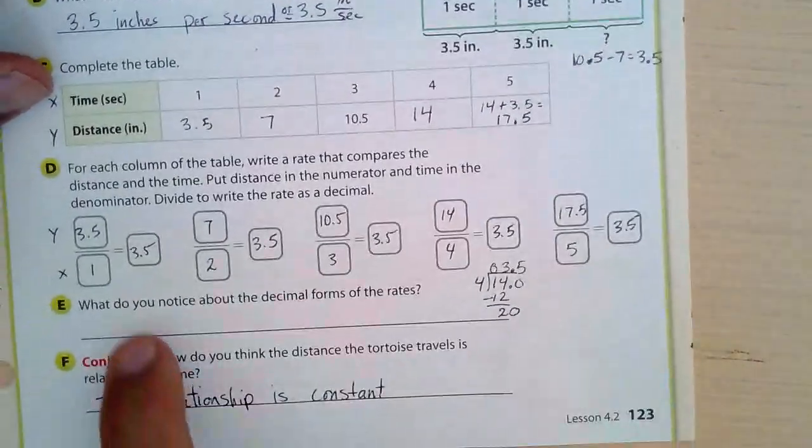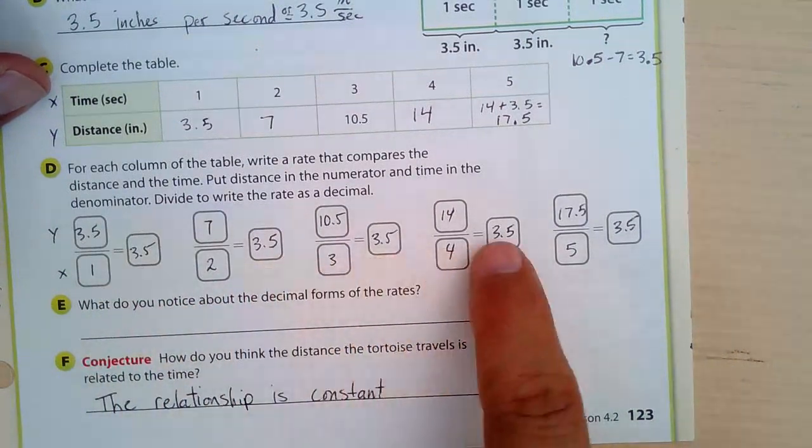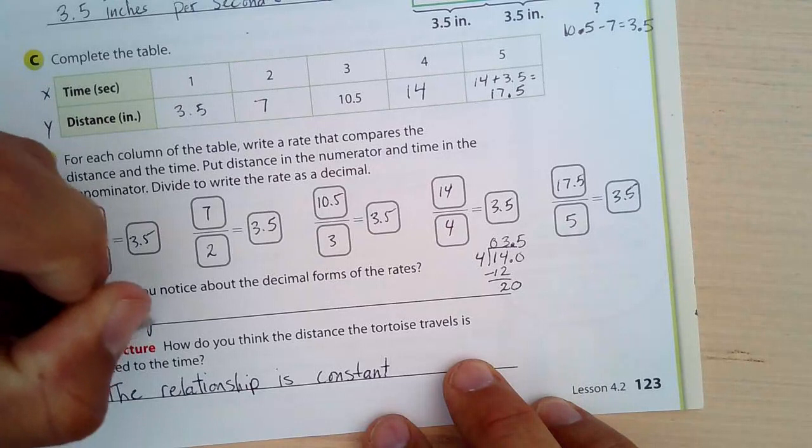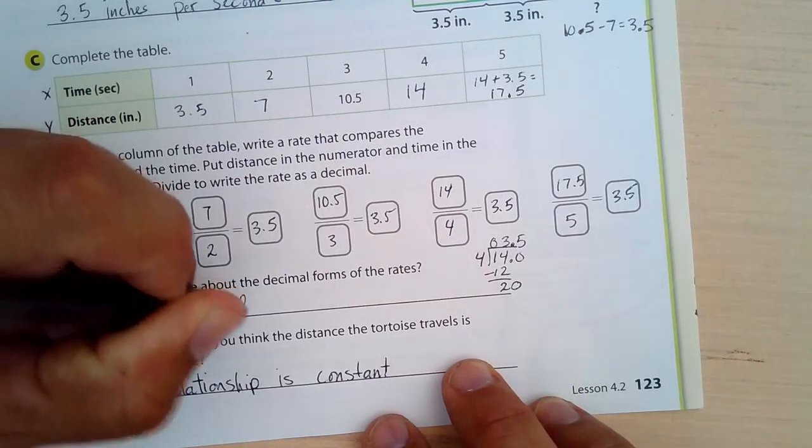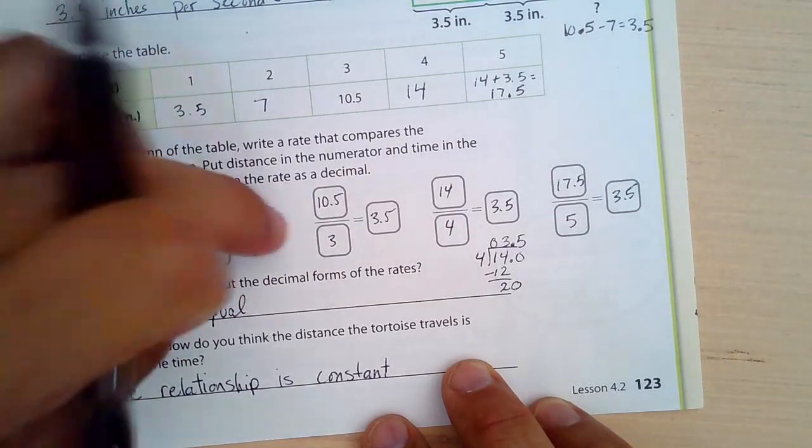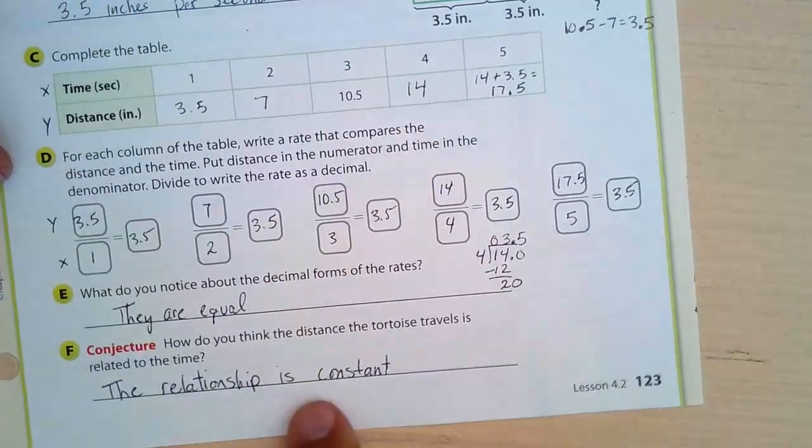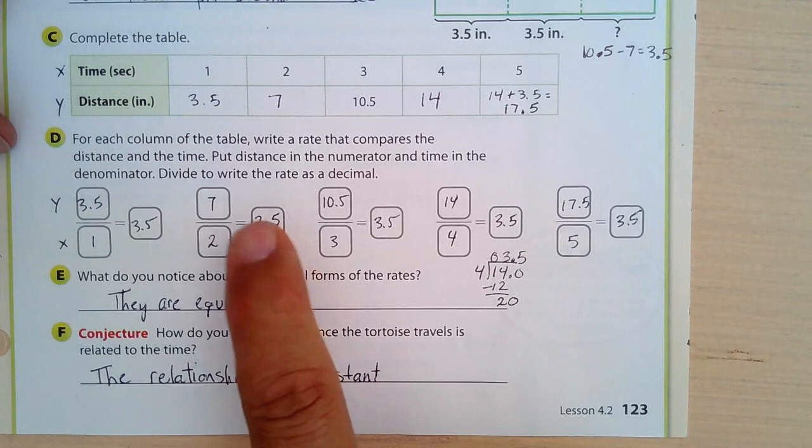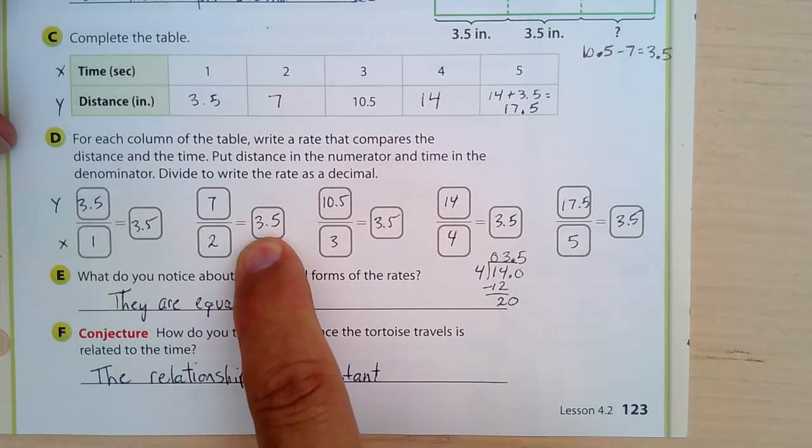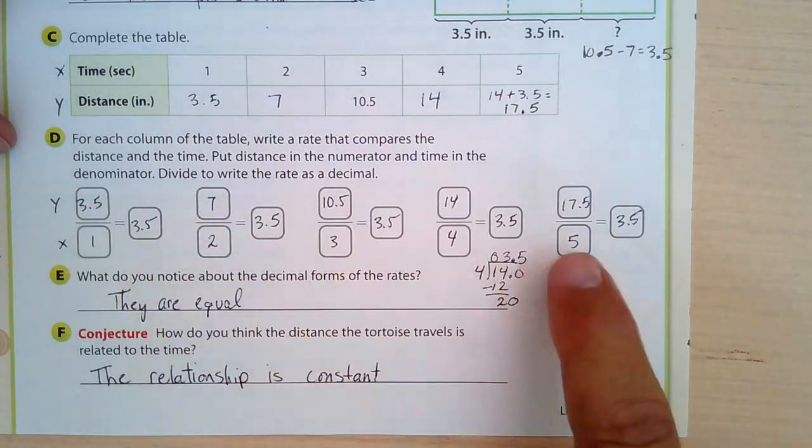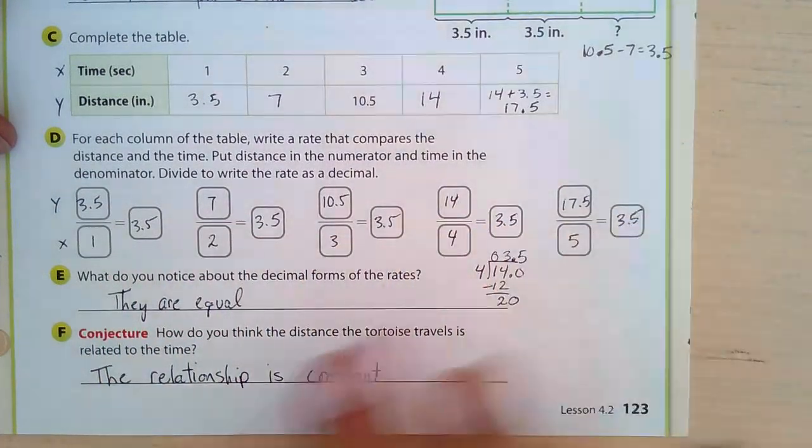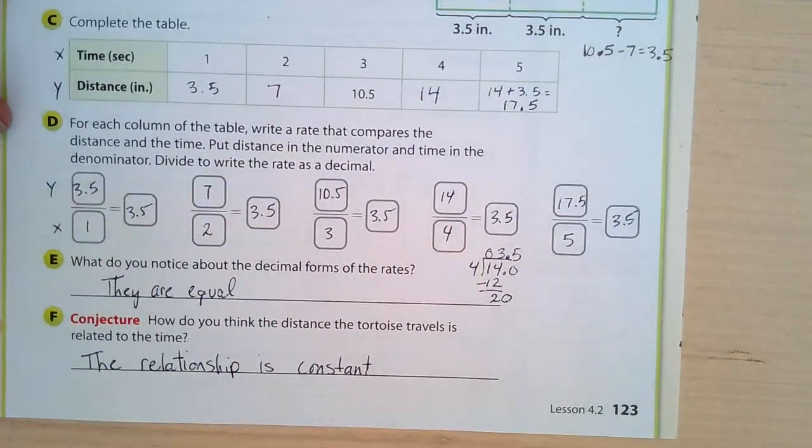What do you notice about all of these rates in decimal forms? They're all 3.5. They are equal. And if they are all equal, that means the relationship is constant. If one of these were different, say this were 4, then the relationship would be variable. But it's not. It is constant. They are all the same. They all have to be the same for it to be called constant.